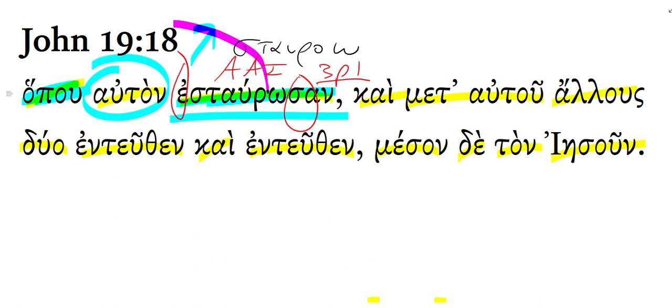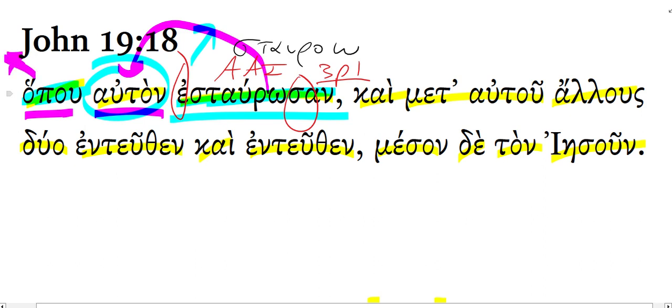And here is the direct object: auton, referring back to Golgotha, or the place of the skull, where they crucified him.